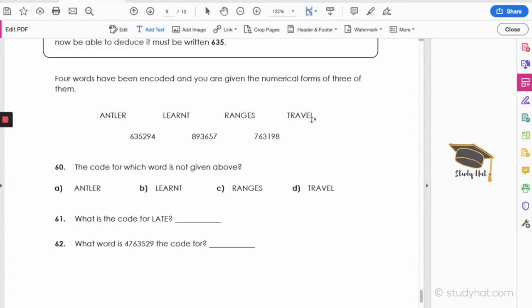And actually we can see that LEARNT and TRAVEL both start with the opposite letters and end with the opposite letters. And actually we can see in this code here that there is one word that starts with 8 and ends with 7, and another one that starts with 7 and ends with 8. So these two must be LEARNT or TRAVEL.